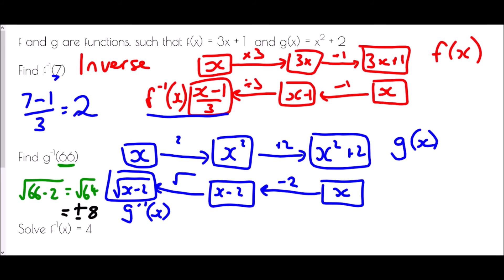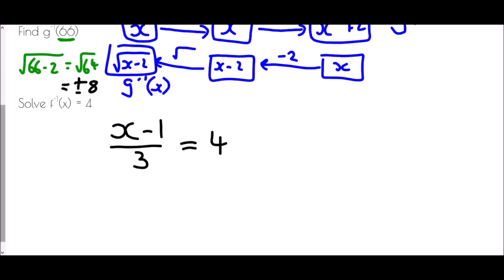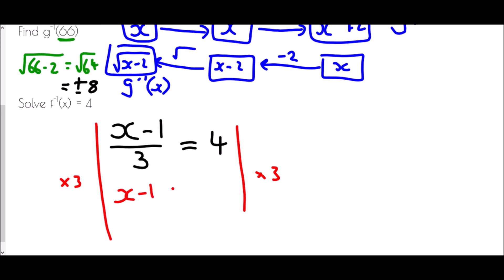And finally, solve f to the minus 1 of x equals 4. We know the inverse of f is x minus 1 over 3, and we've been told this must equal 4. So we solve: multiply both sides by 3, giving x minus 1 equals 12. Add 1 to both sides, so x equals 13.